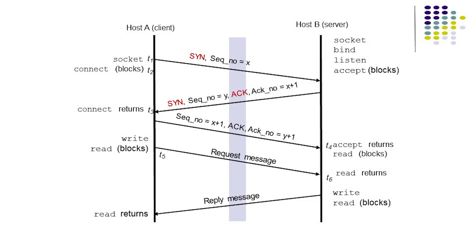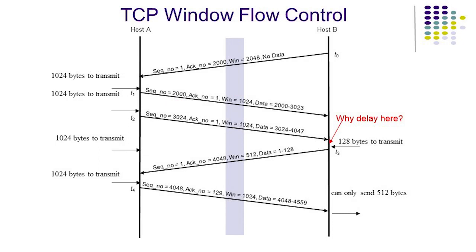The client and the server can then request and reply to messages by write and read calls. This figure illustrates an example of TCP flow control and data transfer. At time t0, the TCP module in host B advertised a window size of 2048 bytes and expected the next byte received to have sequence number 2000. The advertised window size allows host A to transmit up to 2048 bytes of unacknowledged data. At time t1, the TCP module at A only has 1024 bytes to transmit, so it transmits all the data starting with sequence number 2000. The TCP module at A also advertises its own window size of 1024 bytes to host B, and the next byte is expected to have sequence number 1.